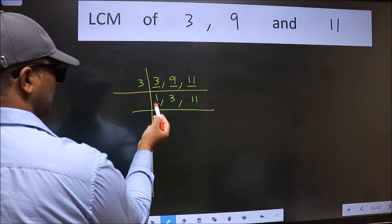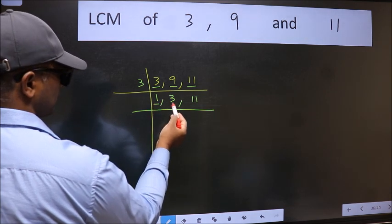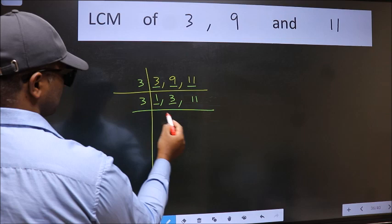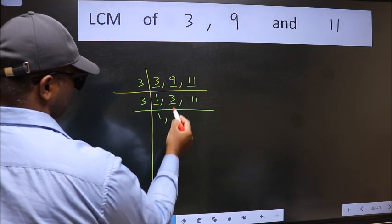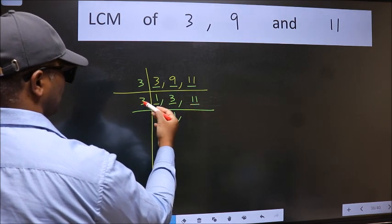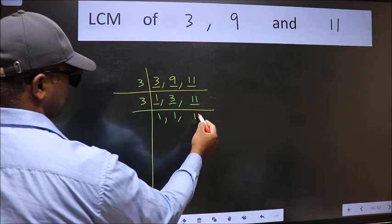Now we got 1 here, so focus on the next number 3. 3 is a prime number, so 3 divides 3. The other number 11, not divisible by 3, so we write it down as it is.